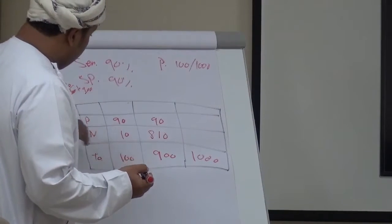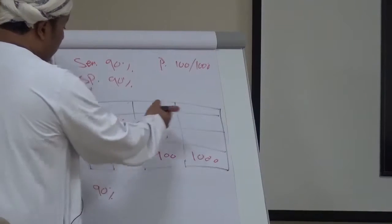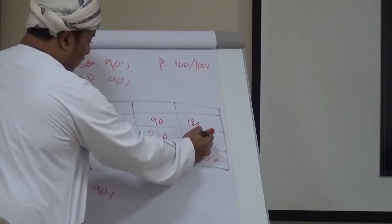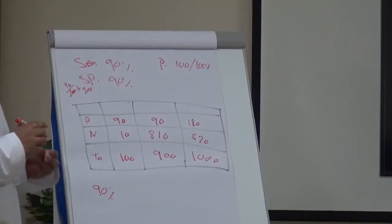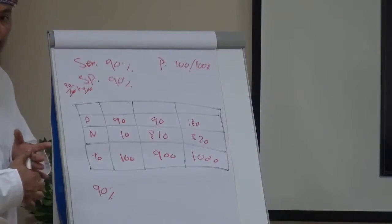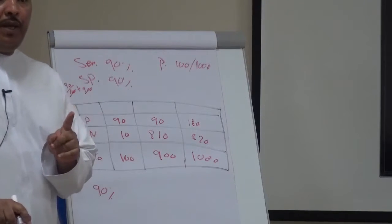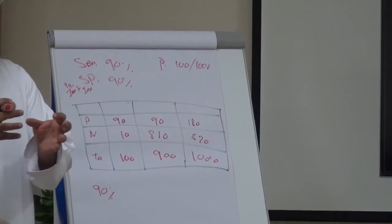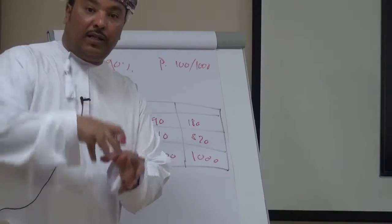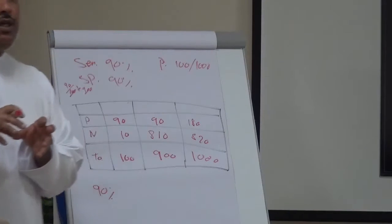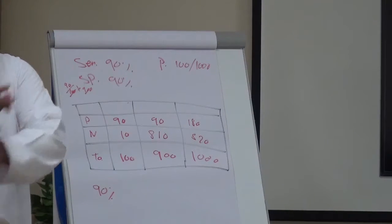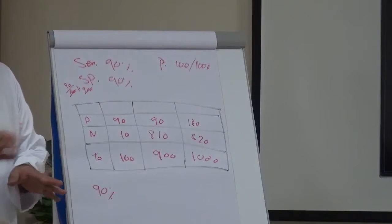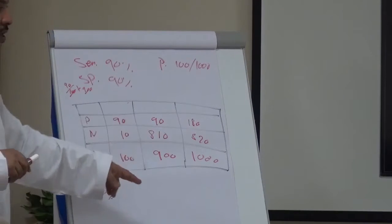Filling in the table: we have 90 true positives and 810 true negatives. The remaining cells are false positives and false negatives. Sensitivity gives us the true positives from those who have the disease; specificity tells us how many of those without disease are truly not having it. From these values we can fill in the complete table and perform all calculations.